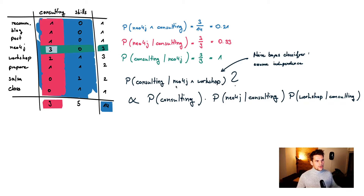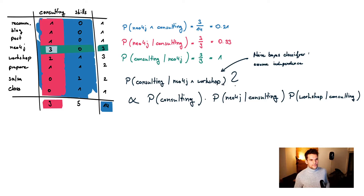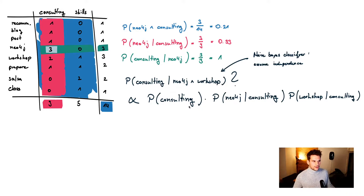Now we can conclude with the Naive Bayesian classification approach. The question we ask is: what's the probability for an area, say 'consulting', given that the user types two tokens — for example, 'Neo4j' and 'workshop'? The Naive Bayesian assumption is that these two tokens are independent, which makes the math much easier. We're calculating not directly a probability but a score, because we leave out a denominator that would be constant for our two tokens. The formula multiplies the probability for the area with the conditional probabilities of seeing each token given that area.